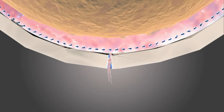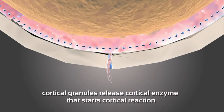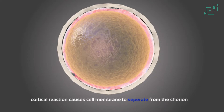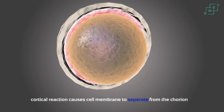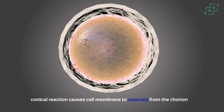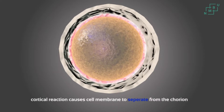With the fusion of the spermatid and oocyte cell membranes, a cortical reaction is set in motion. There are changes in the chorion and enzymes released from the cortical granules in the oocyte cytoplasm cause the separation of the oocyte cell membrane from the chorion and the establishment of the perivitelline space. The chorion swells and lifts away from the zygote.